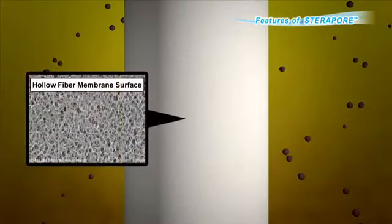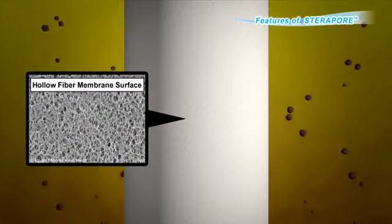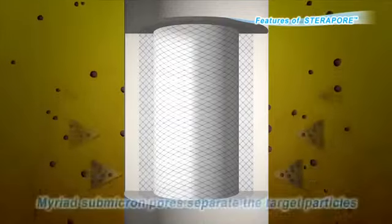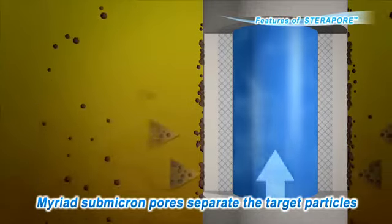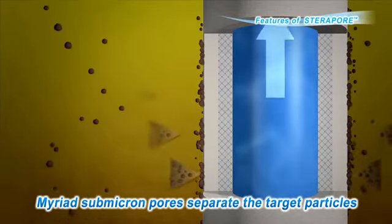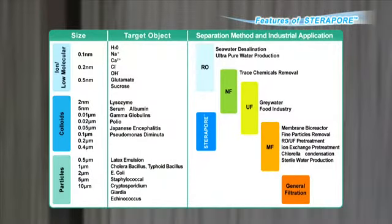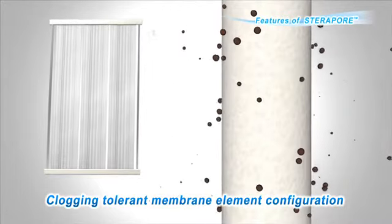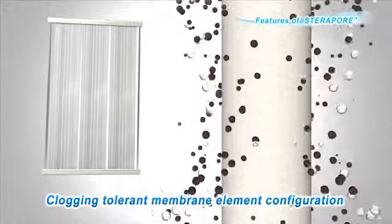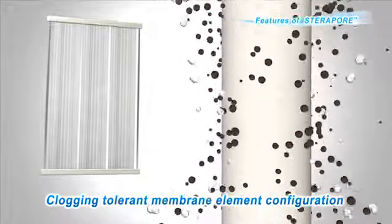On the PVDF layers of the hollow fiber membrane surface, there are countless small pores which separate the target particles. There are two types of hollow fiber membranes — called the UF and MF membranes — which can be selected to match the target material to be removed. By collecting and processing hollow fiber membranes into a flat bundle, a membrane element is formed, which has a very good structure for membrane cleaning by aeration, ideal for high turbidity operations at MBR plants.